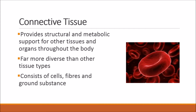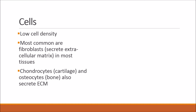Connective tissue provides structural and metabolic support for other tissues and organs throughout the body. It is far more diverse than any other tissue type and mainly consists of cells, fibres, and something called ground substance. It has a low cell density. The most common cell types are fibroblasts, which secrete extracellular matrix in most tissues. In cartilage you find chondrocytes, and in bone you find osteocytes, all of which secrete extracellular matrix.